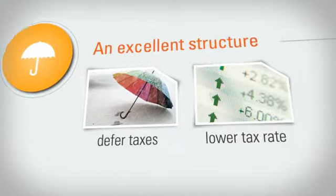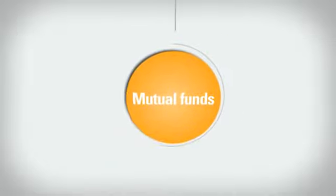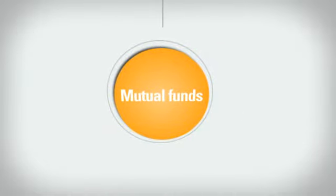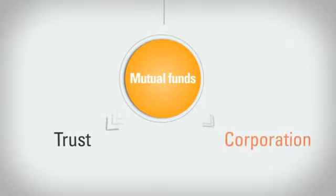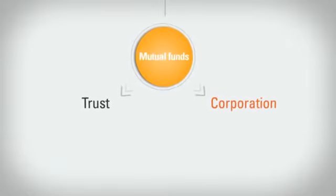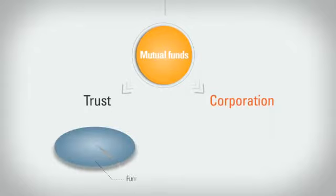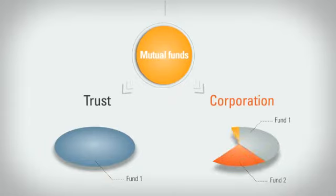Here's how it works. Mutual funds can be structured two ways: either as a mutual fund trust or a mutual fund corporation. The important thing to remember is that a trust is generally only one fund, whereas a corporation is one entity that may consist of any number of share classes, each representing a separate fund.